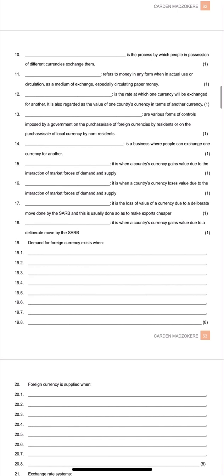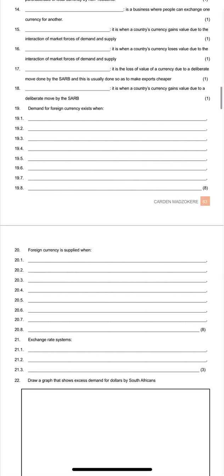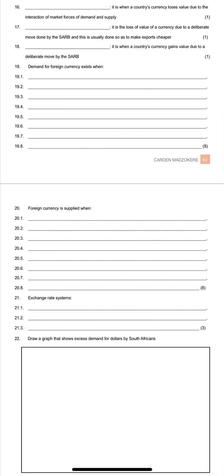Now we have foreign exchange. There are a couple of terms you need to be able to define, from number 10 to 18. When does demand for foreign currency exist? A clue: demand for foreign currency is something like saying 'I want pounds.' Why would you want British pounds? You wouldn't spend them at a local mall because they want rand. So when would you want pounds? Probably when you want to go to the UK. Have something like that in your mind when you come up with reasons why foreign currency can be demanded.